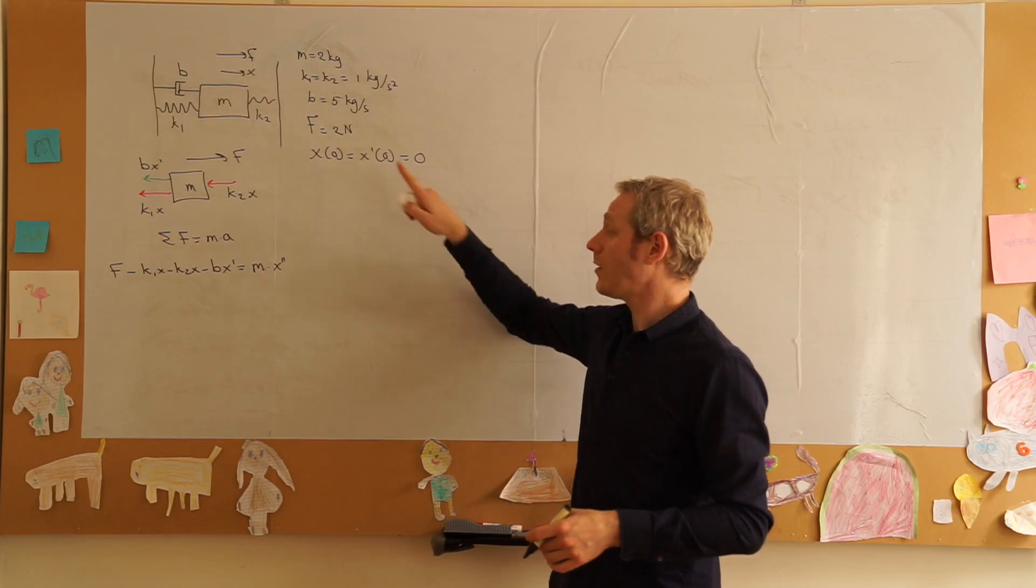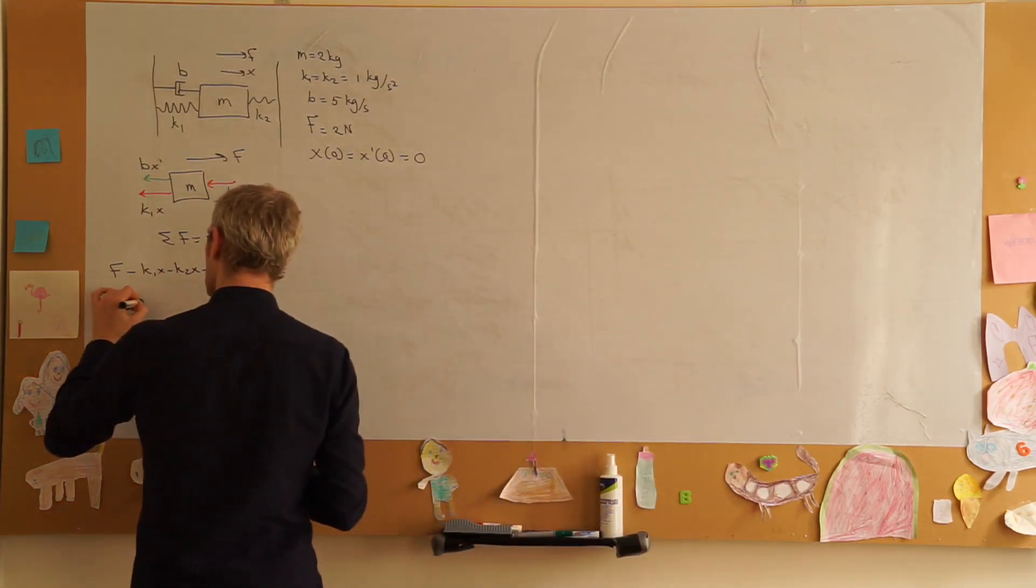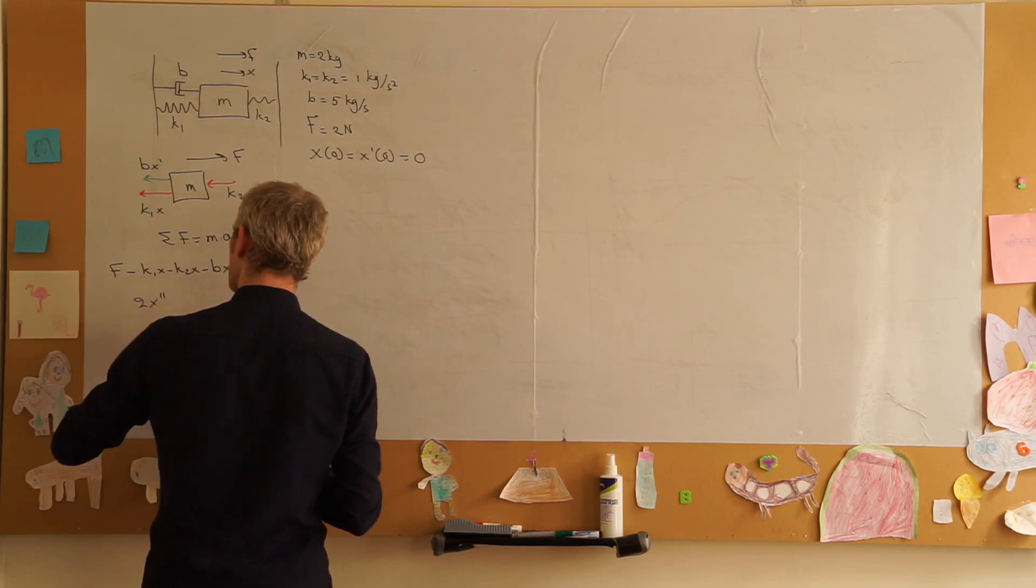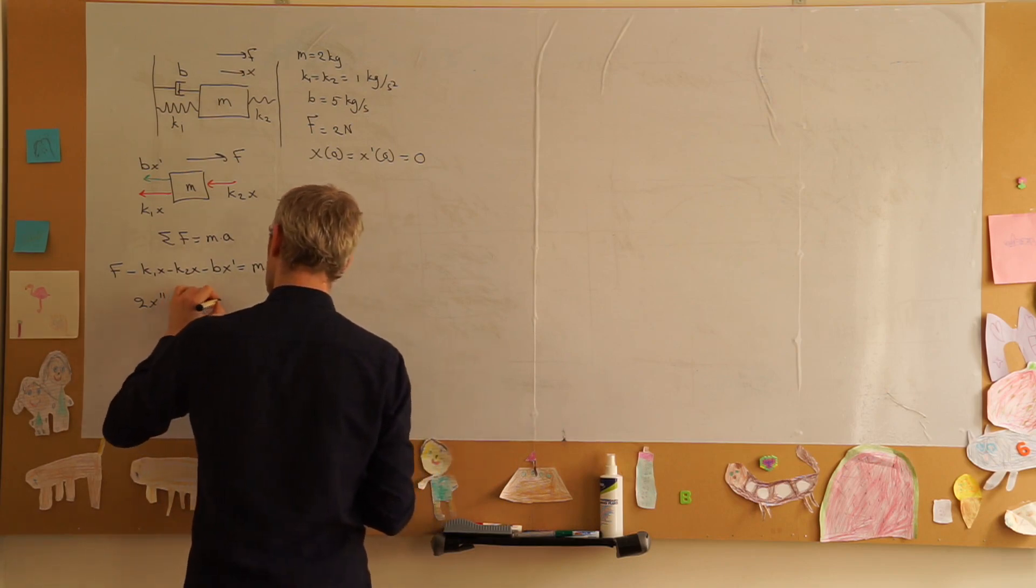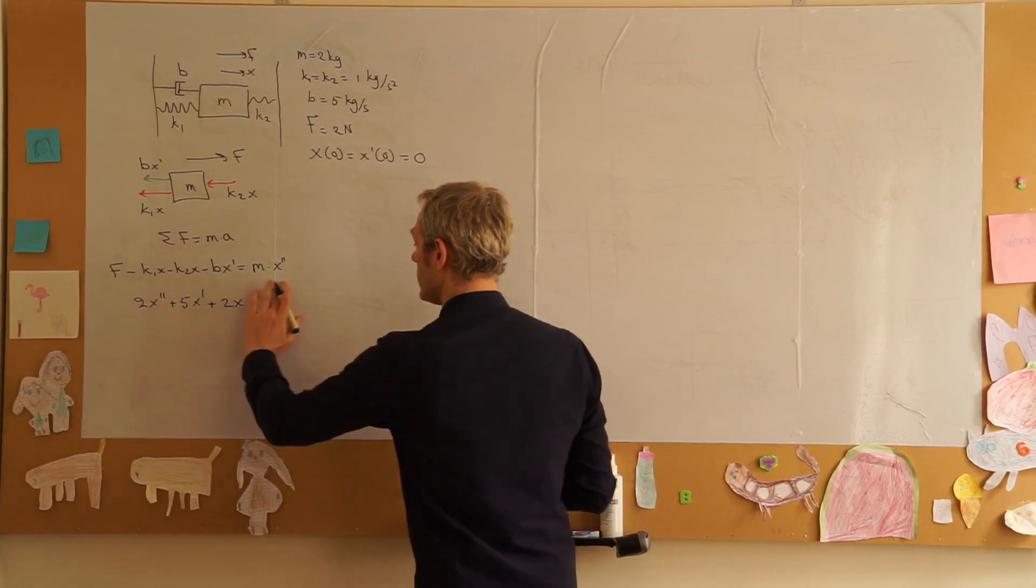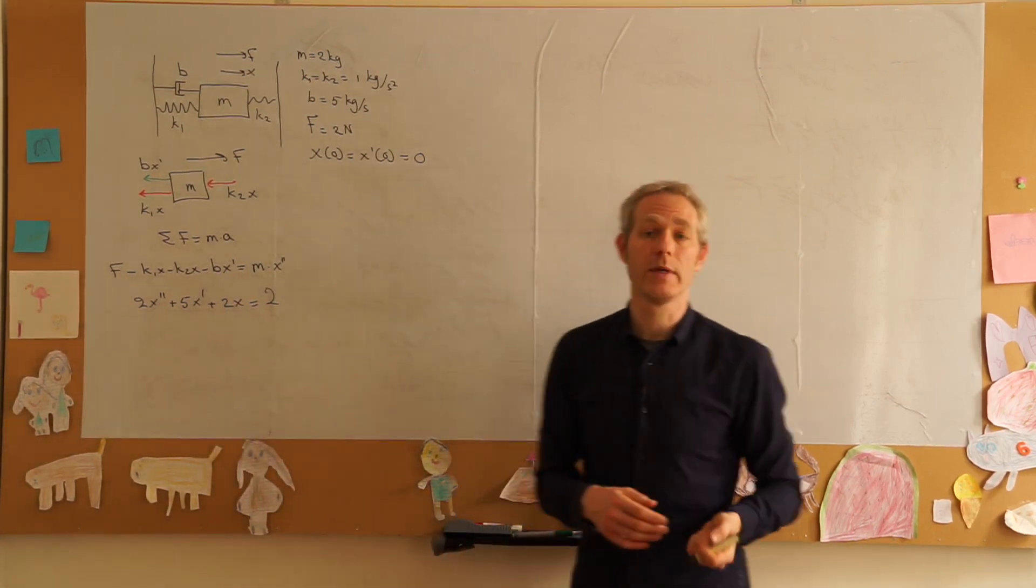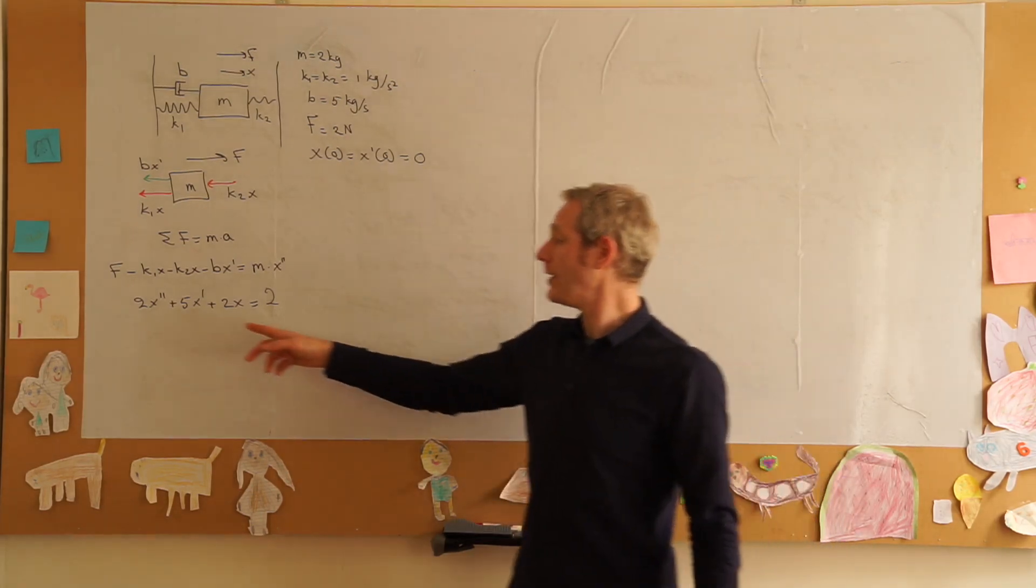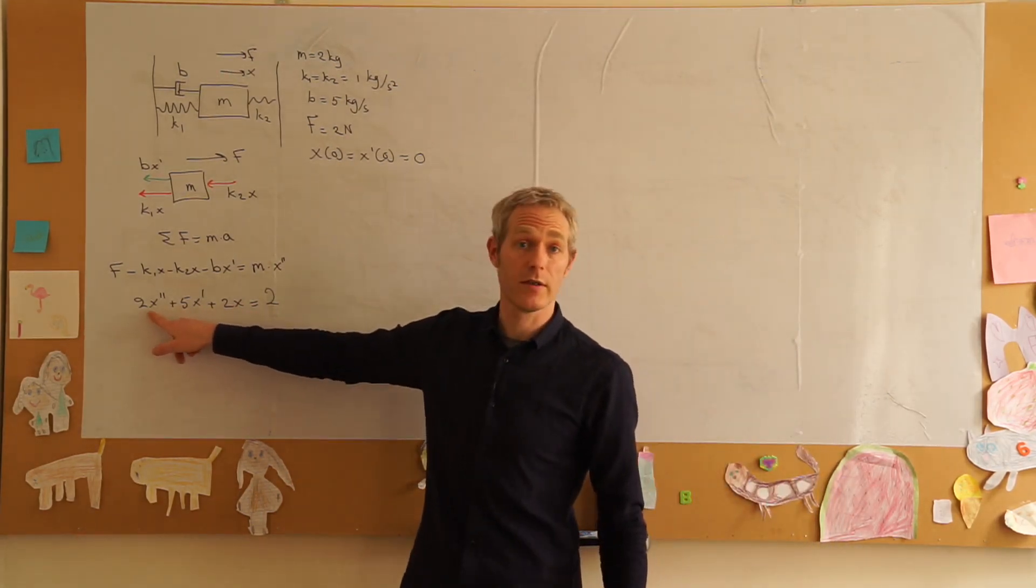Let's fill in all the coefficients and turn this into one differential equation: 2 x double prime plus 5 x prime plus 2 x is equal to F or equal to in our case 2. We can divide this by 2 so that the coefficient in front of x double prime equals 1.